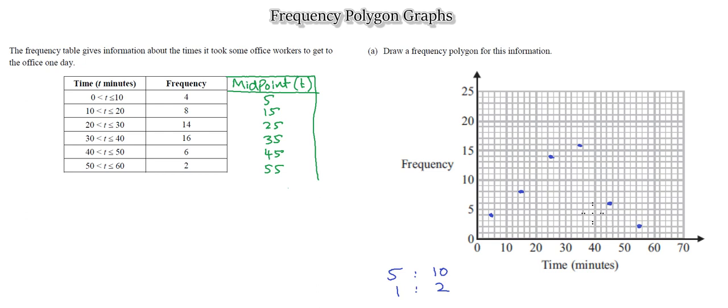So again, we'll take a ruler and we will join the two plots together. These two join together, join them together, this point we join with this point, and likewise the last line. There we are, the frequency polygon graph. We do not join this line from the zero, and we do not join the last one from anywhere else. We leave the points in between them.